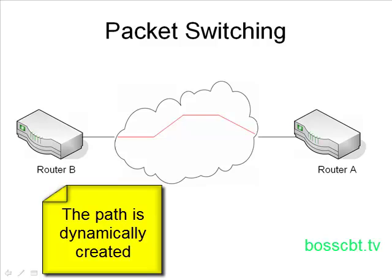That red line represents the first packet sent between these two routers. The very next packet could go a different way, and yet the third packet could go yet another different way. So it's not a predetermined path — it varies, it's very dynamic. Each device within the path can make a decision based on the information in the packet as to where to send it next — what is the best route? So multiple paths can exist here.